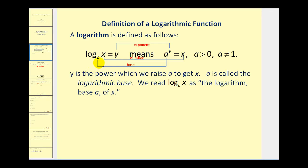Log base a of x equals y means a to the power of y is equal to x. Since a logarithm is an exponent, it should seem logical that we can write a log equation as an exponential equation. Notice a would be the base, y would be the exponent, and x would be the number. We could say that y is the power which we raise a to get x. We should note that a has to be greater than 0, and a cannot equal 1.